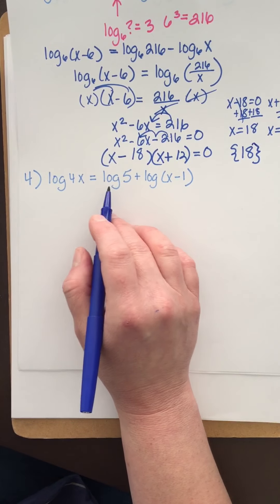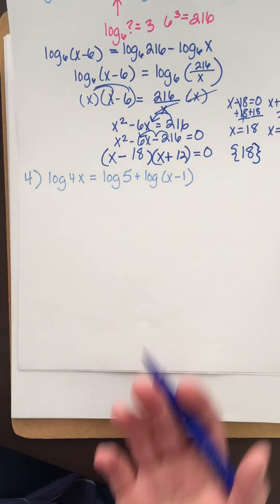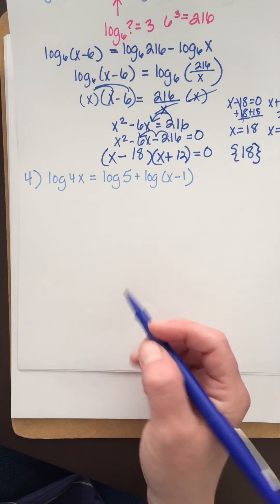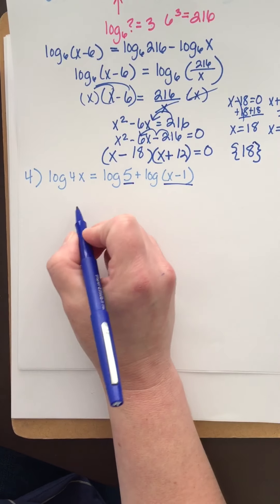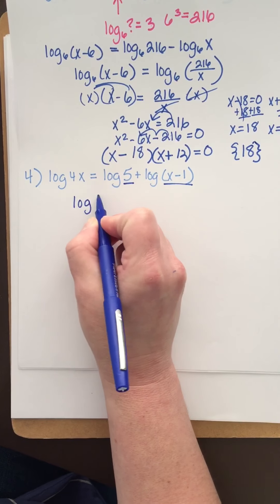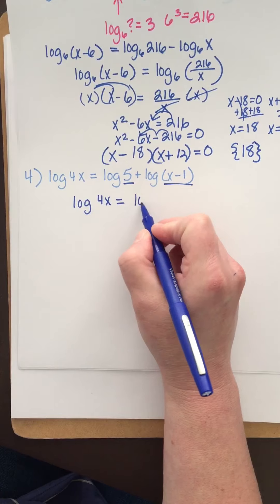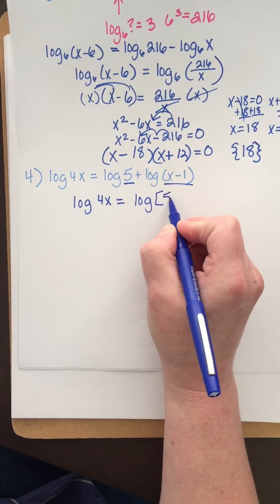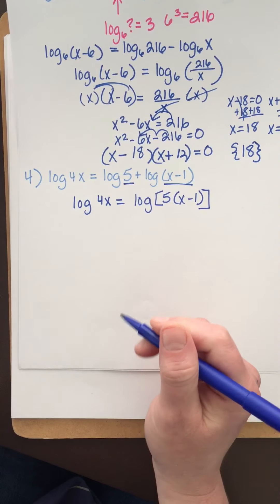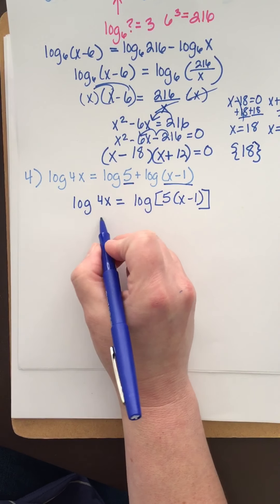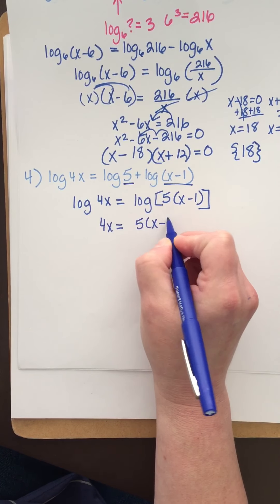We have the log of 4x equals the log of 5 plus the log of x minus 1. Everything is log base 10. Since we're adding, I can multiply: log of 4x equals log of 5 times x minus 1. Then I can use the one-to-one property: 4x must be equal to 5 times x minus 1.